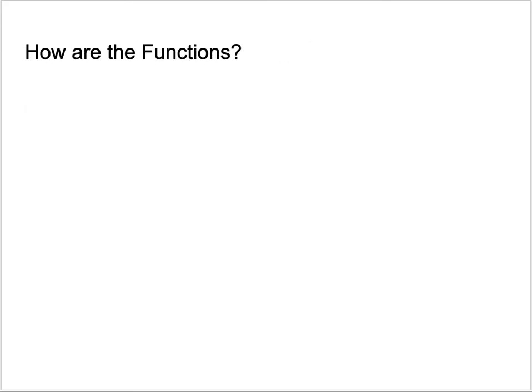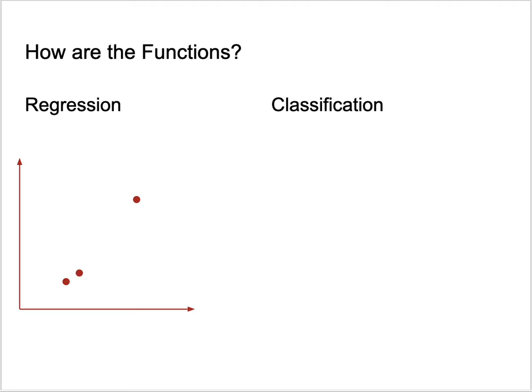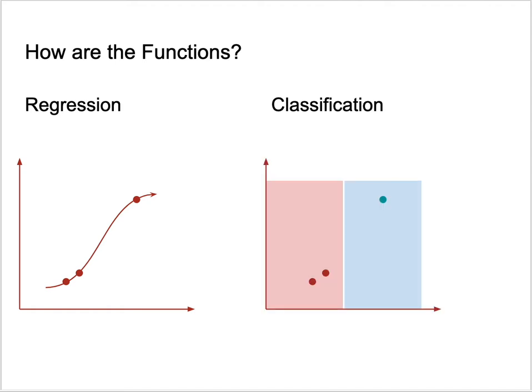Which kinds of functions can we try to infer from the analysis of known data? There are two families: regression functions and classification functions. In regression, we try to reconstruct a numeric function from a few data points. In classification, we are interested in assigning data points to categories. In the next class, we will see examples of both in the context of compilers and static analysis.